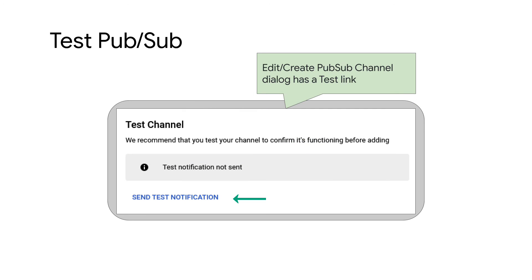A quick note: when editing a PubSub notification channel, there's a link — "send a test notification" — which you can use anytime to get sample data or test your code. You can then go to the subscriptions for the PubSub topic and pull a message to see the contents, or allow your code to receive the message and see what it does.